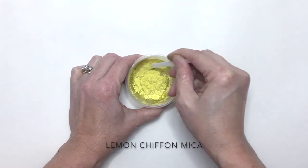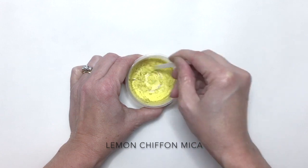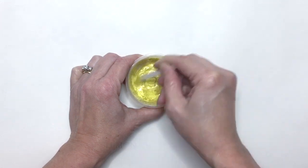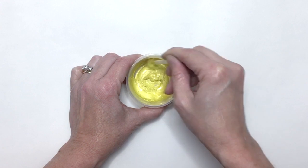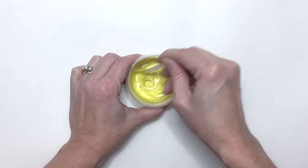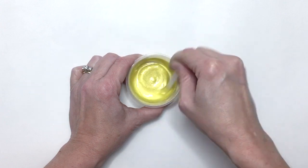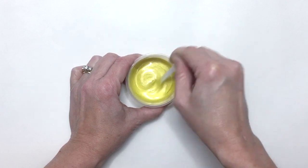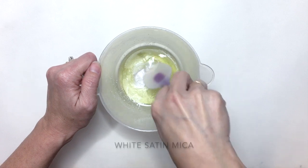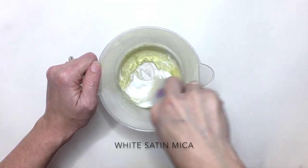The other color that I'm using is lemon chiffon. It's a nice light yellow. And I'm using white satin mica as the base.